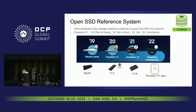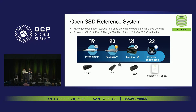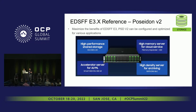Petabyte-scale reference systems. We started the Poseidon project in 2019, and at the time we contributed MissionPIC, which is the NGSF reference system, to OCP. We announced Poseidon version 1 in 2020, and Poseidon version 2, which is the E3 reference system, in 2021. In 2022, we finished contribution of the Poseidon version 1 specification to the OCP community, and we will contribute Poseidon version 2 to expand the EDSF E3 ecosystem.